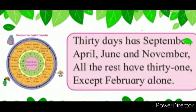Always remember children: 30 days has September, April, June, and November. So 30 days has September, April, June, and November. Then remaining all have 31 dates. But February month has 28 or 29 dates.